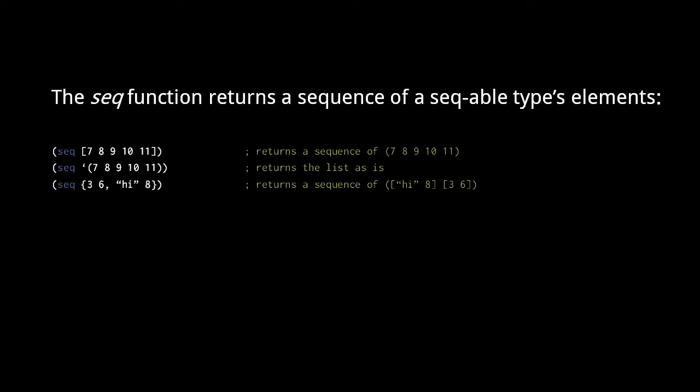In contrast, list objects are themselves sequences because their implementation allows for very cheap first and rest operations. Rest on a list returns a new list whose head is the second node of the original list.